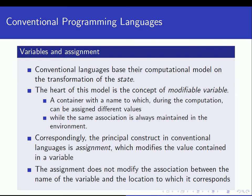Let's first refresh our memory regarding conventional programming languages. With conventional programming languages we are talking about imperative languages like Pascal or C, or object-oriented languages like C++ or Java. Notice that conventional languages base their computational model on the transformation of the state. The program at any given time has a particular state — the variables have some values — and at every step the state of the program changes.